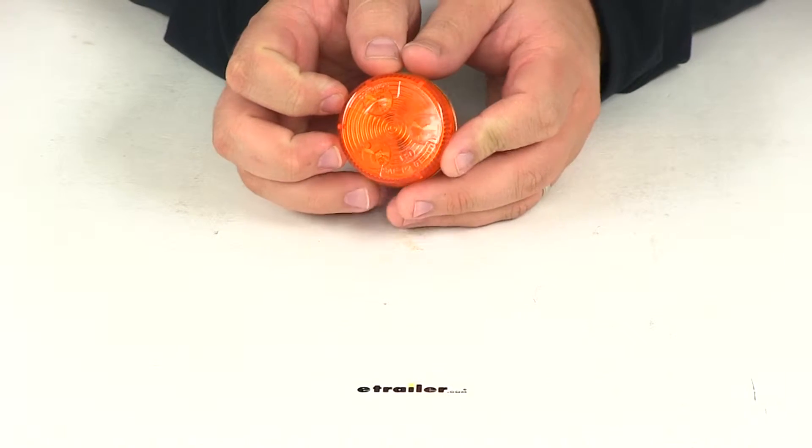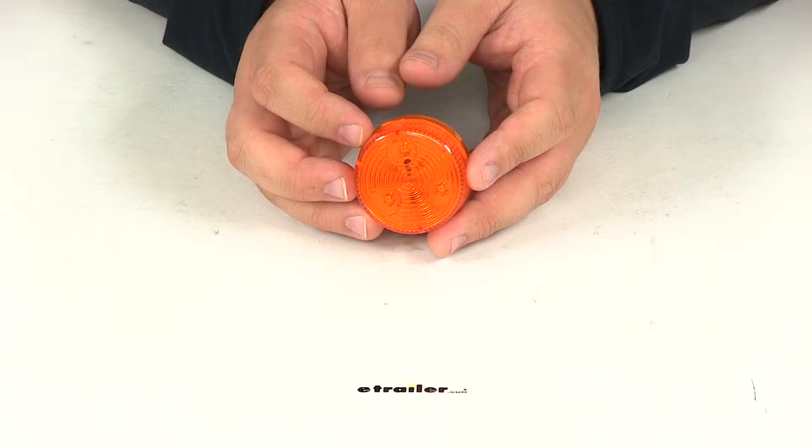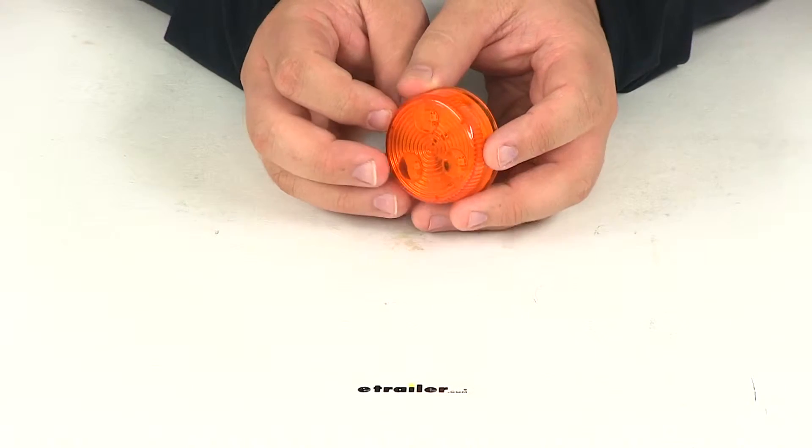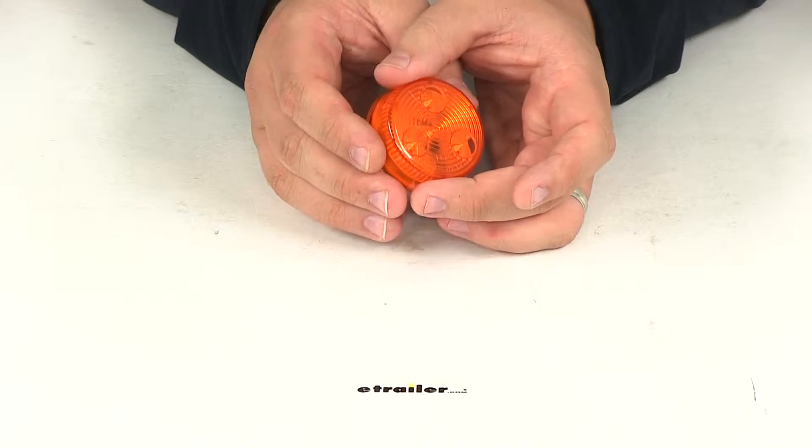Today we're going to be taking a look at part number MCL55AB. This is the Optronics round LED amber trailer clearance or side marker light. It's going to feature a nice sealed waterproof design. It's going to have the amber lens.